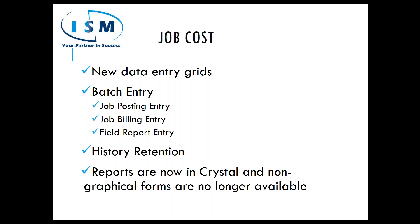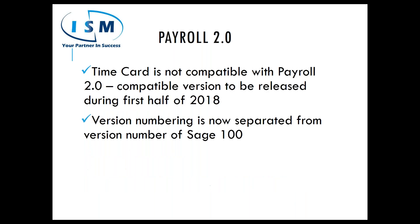The biggest driver of Sage 100 2018 was actually the new Payroll 2.0. Out of the gate, Time Card is not compatible with Payroll 2.0. If you are currently running Time Card integrated with Payroll, you will not be able to upgrade to Sage 100 2018 at this time. Sometime in the first half of next year, they will release a Payroll 2.5 or equivalent that will be compatible with Time Card. Payroll 2.0 now has the ability to be upgraded separately from your Sage 100 system.